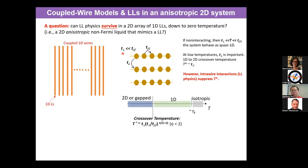Now, if you have Luttinger liquid physics, you have to consider interactions. Within each wire — intra-wire — you have Luttinger liquid physics turned on. As I mentioned, Luttinger liquid suppresses the single-particle tunneling, because the single-particle density of states is suppressed by the power-law exponent. Because of the strong correlations in 1D, the electrons don't like you adding one more electron. So you can understand this: the intra-wire interaction and Luttinger liquid physics suppress this crossover temperature T* to a lower value. This has been seen in quasi-1D conductors and polymer conductors. The crossover temperature will be suppressed if you have interactions developing in the system.